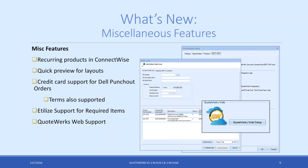We have some miscellaneous features added as well — some smaller features for the ConnectWise users. Recurring products in ConnectWise — you're able to set that up now. You do have to be on ConnectWise 2016.3 or higher to use that functionality. Once you're upgraded to the latest version of QuoteWorks, you can set it up where items marked as recurring products in QuoteWorks will actually go over to ConnectWise as recurring products as well.